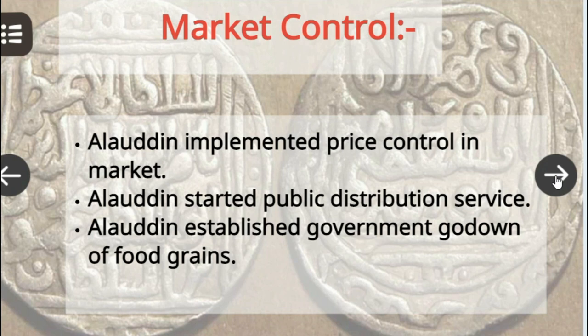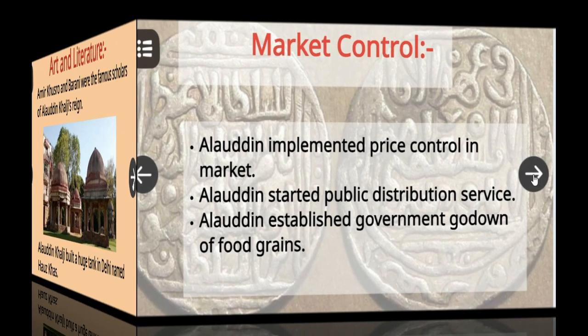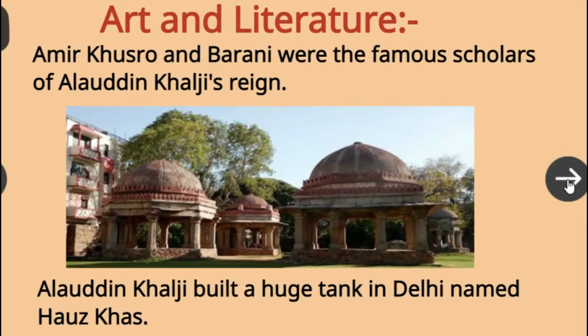Alauddin started a public distribution service and established government godowns for grains. Regarding art and literature, Alauddin Khilji was a great patron — Amir Khusrow and Barani were the famous scholars of his court.